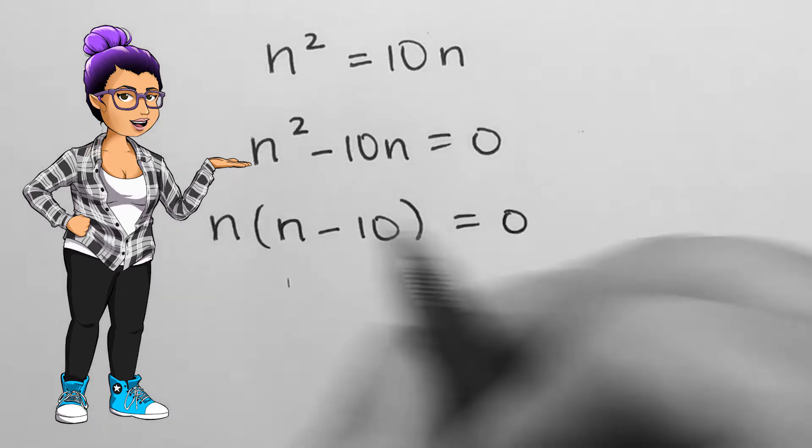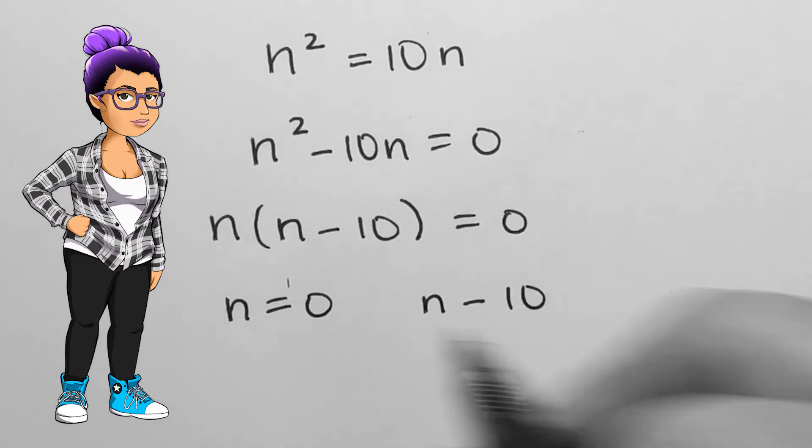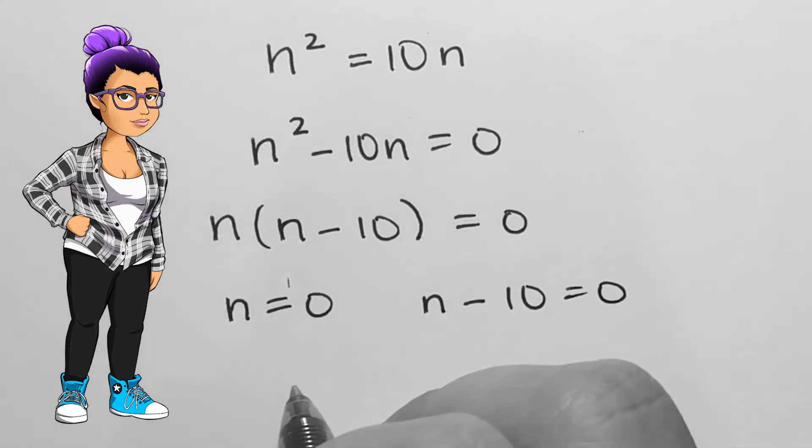On the factoring video, we saw that the left-hand side of this equation can also be written as n times n minus 10, so n equals zero and also n minus 10 equals zero.